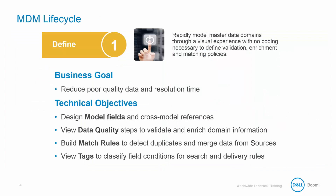Starting with the define step, we are able to accomplish our main goal of reducing poor quality data and resolution time. We will identify the fields that will make up our golden record, which will be our single source of truth. This is the first step in increasing data quality. Our technical objectives include designing our model by selecting the fields we will be using, building match rules that will determine if the data is a new record or an update to an existing record, creating a data quality step that will remove incorrect records, and inserting tags to group records together.